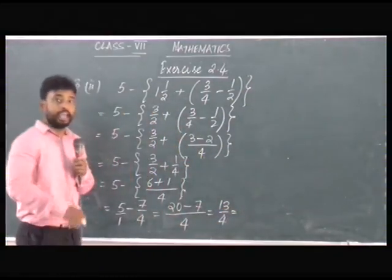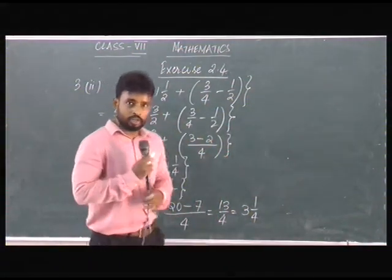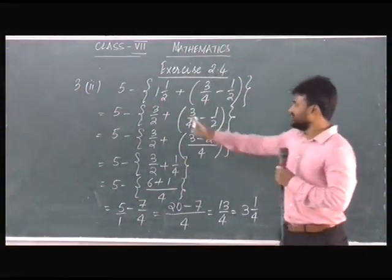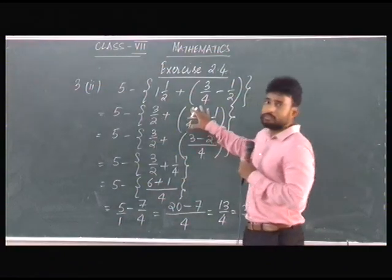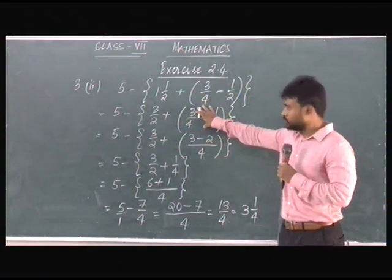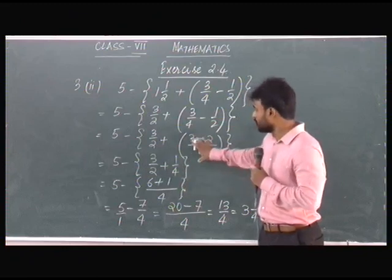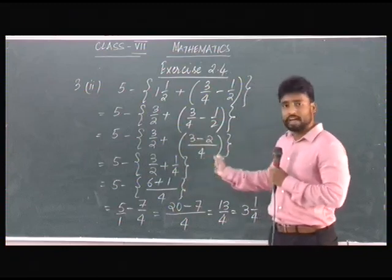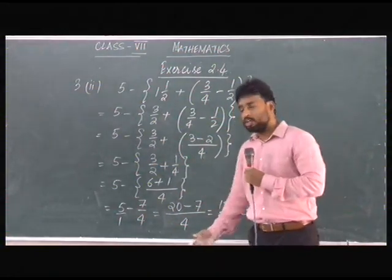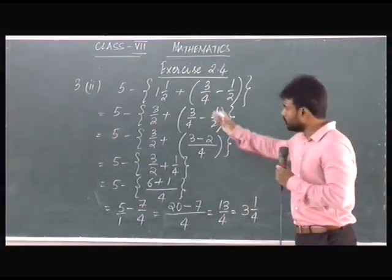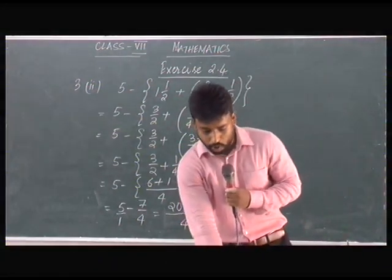13/4 can be written in mixed fraction as 3¼. So this is how you solve it: first change the mixed fraction into improper fraction, then solve the circular bracket and remove it, then solve the curly bracket and remove it, and then proceed to get the ultimate answer. This is the step you will follow to solve these kinds of problems. Let us come to question number 4, part 2.